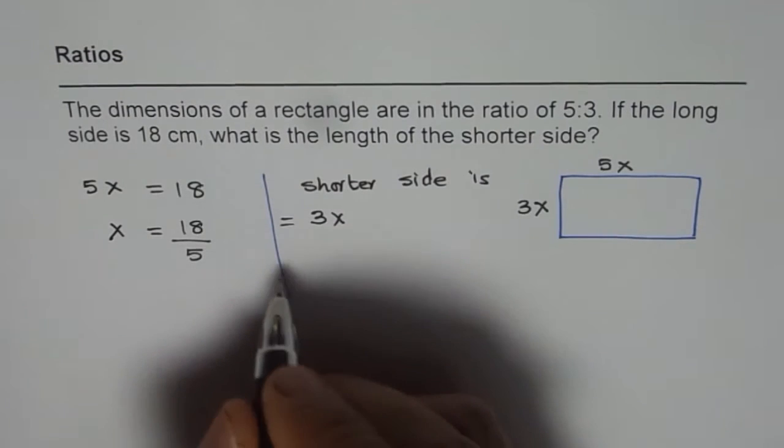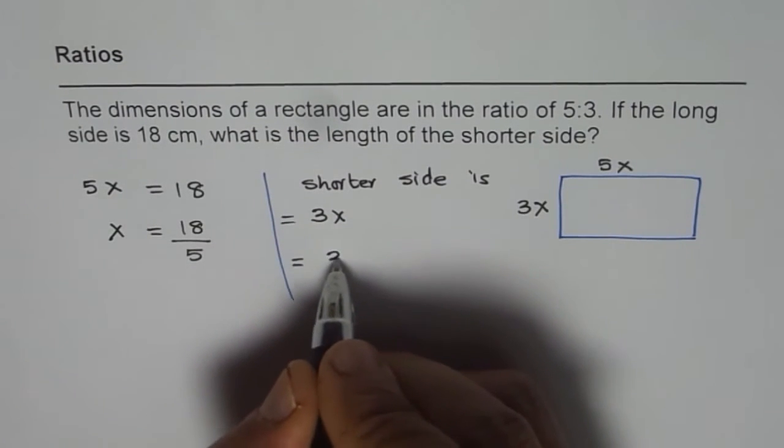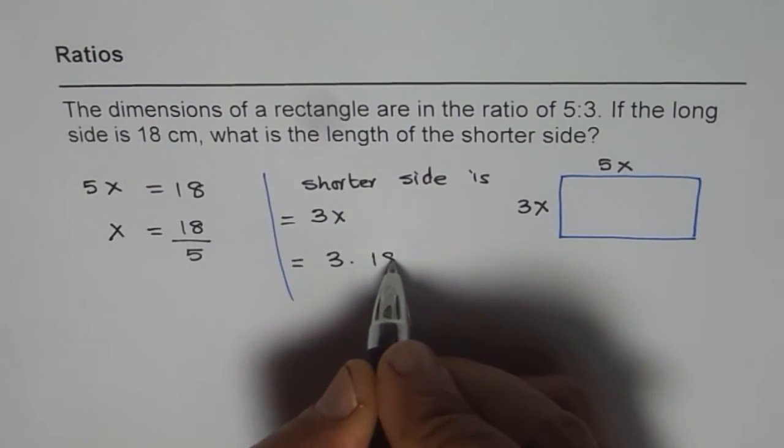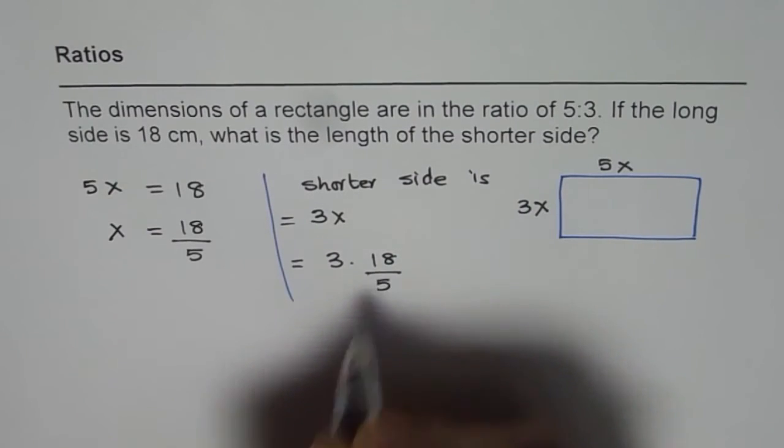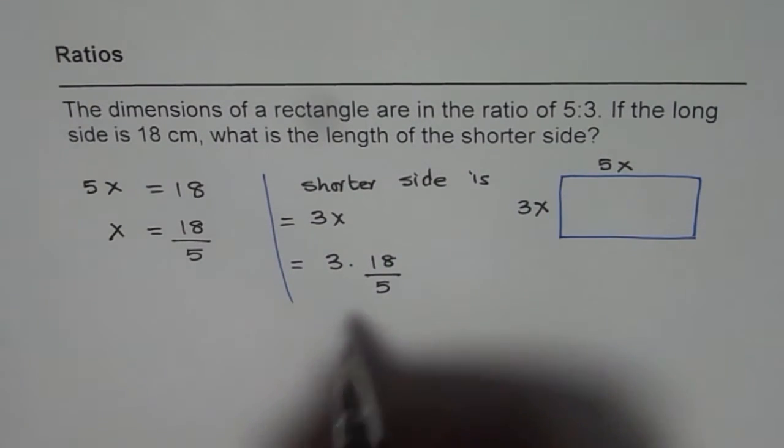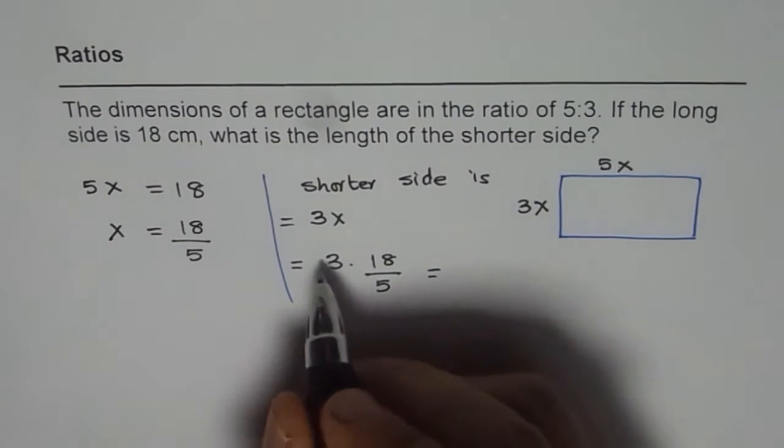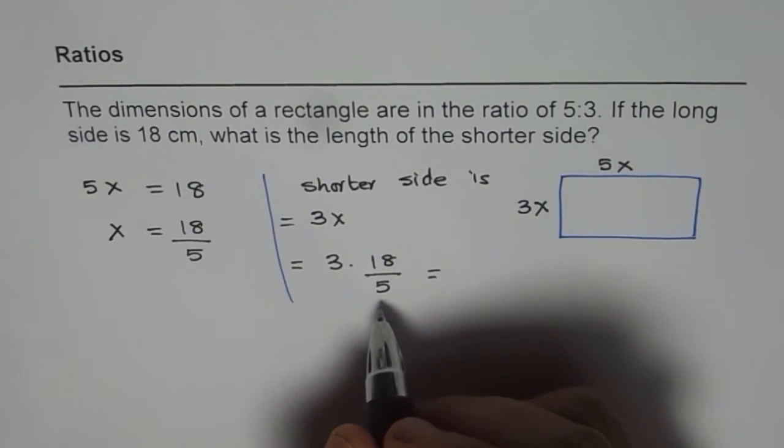Therefore, we can replace this x with 18 over 5. So we have 3 times 18 over 5. So that is the length of the shorter side. We can always multiply this and then find the answer.